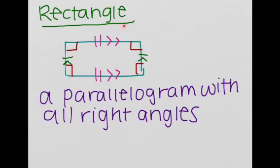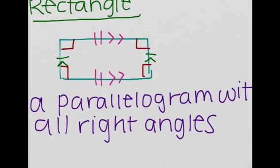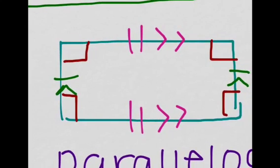Now let's delve into parallelograms and look at the rectangle. The rectangle is a parallelogram with all right angles. It has the same properties of a parallelogram — this side is congruent to and parallel to this side, and this side is parallel to and congruent to this side. The opposite angles are congruent, but realize all four angles are the same — they're all 90 degrees.